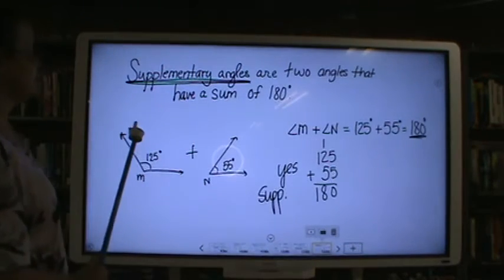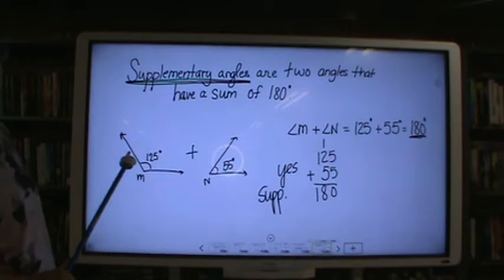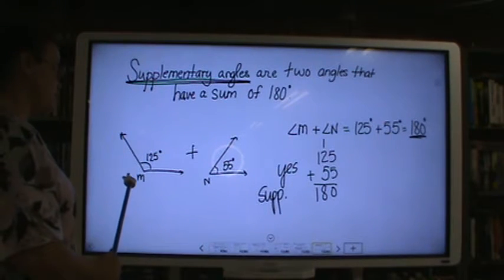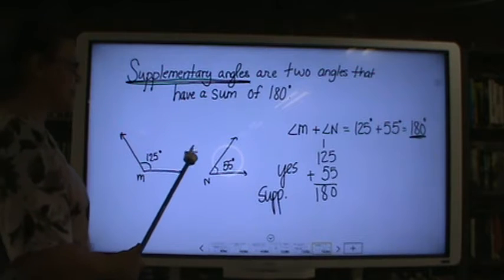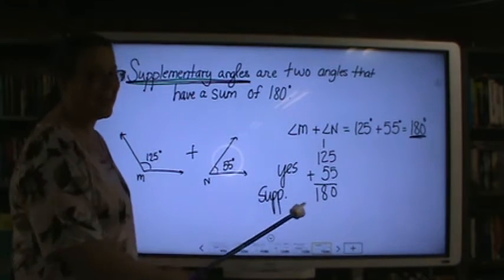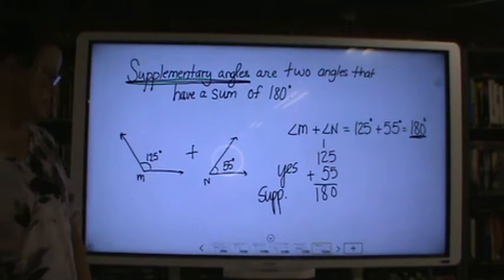Supplementary angles are two angles that have a sum of 180 degrees. The angle M is 125 and angle N is 55 and together they equal 180. They would be considered supplementary angles.